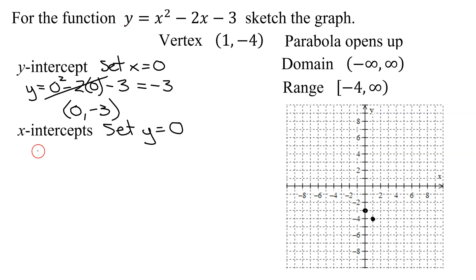x-intercepts, you find by setting y equal to 0. So I'm going to get 0 equals x squared minus 2x minus 3. So we're going to have to solve this quadratic equation. This is one of the easier ones to factor, since a, the leading coefficient on the x squared, is 1. So I'm going to look for two numbers that multiply to 1 times negative 3, which is negative 3. And they need to add to the b-term, which is negative 2.